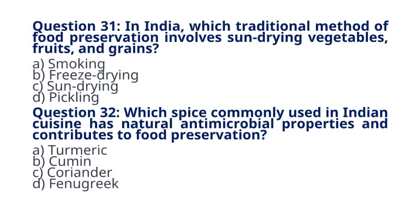Question 31. In India, which traditional method of food preservation involves sun drying vegetables, fruits, and greens? A. Smoking. B. Freeze drying. C. Sundrying. D. Pickling. The correct answer to question 31 is option C. Sundrying. Explanation. Sundrying is a traditional method widely used in India for preserving various food items, taking advantage of abundant sunlight.